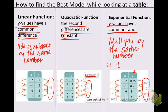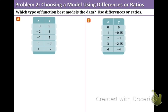Now let's take a look at example two and use this knowledge and apply it. Part A. Which type of function best models the data use differences or ratios? Draw your arrows for each column. The x values are going up by one. The y values are going down by four. Look at the chart that we just talked about. Because the first differences are constant and we are adding or subtracting by the same number this is a linear function.